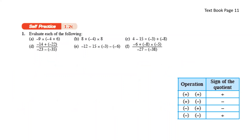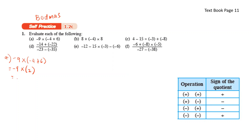Next, let's take a look at self-practice 1.2c — evaluate each of the following according to the BODMAS rule. Operations within the bracket come first. Starting with the bracket: negative 4 plus 6, you get 2. So negative 9 times 2 — negative and positive, you get negative. So 9 times 2, you get 18.